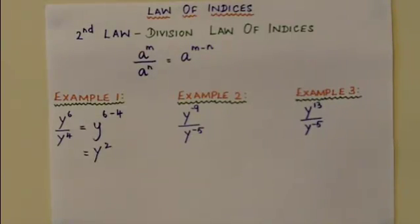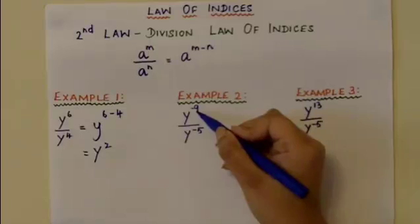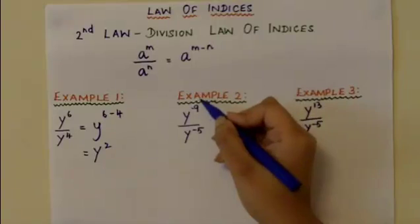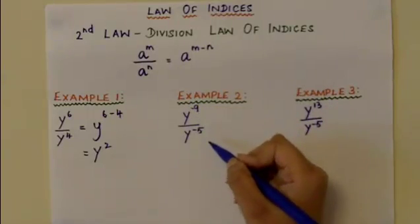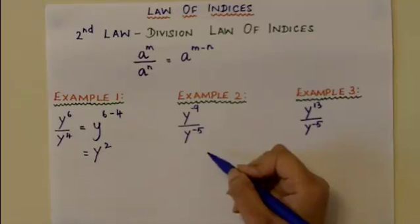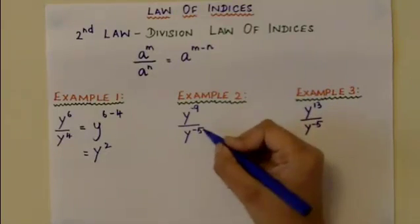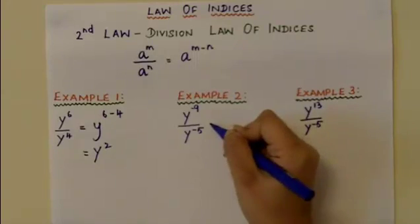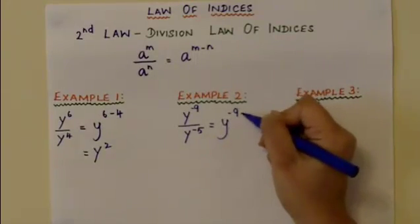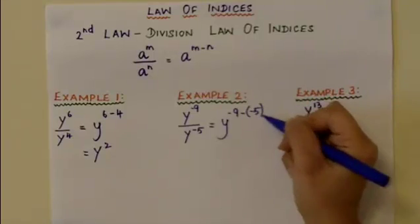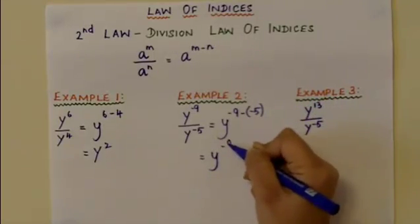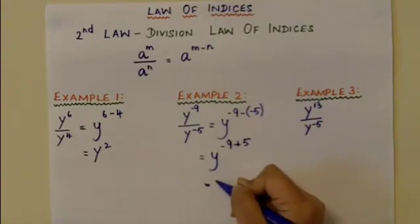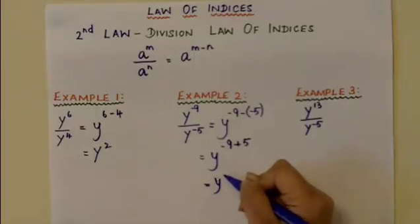Moving on to the next example, we can see that it is y to the power of minus 9 divided by y to the power of minus 5. The power of the numerator is minus 9 and the power of the denominator is minus 5. So you take away the power of the denominator from the power of the numerator. Therefore, it becomes y to the power of minus 9 minus of minus 5. Since minus times minus is plus 5, this is equal to y to the power of minus 4.